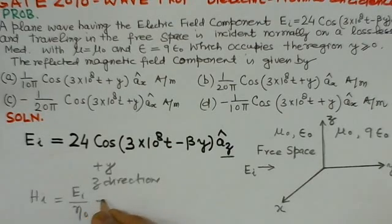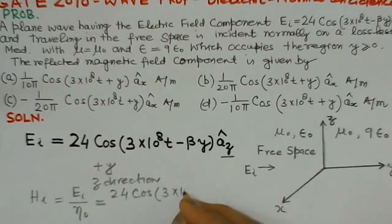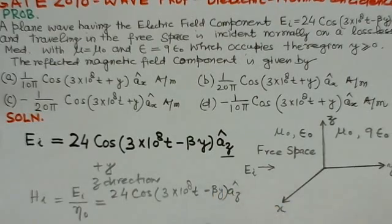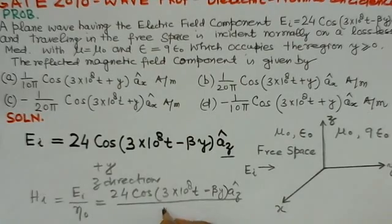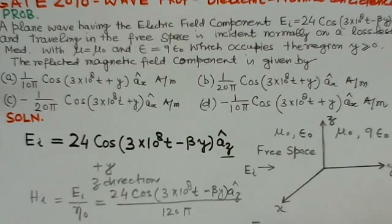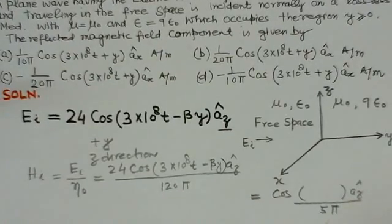We have already seen this equation is 24 cos(3×10^8t - βy)az. Now, η0 we can write as 120π. So this comes to 24 over 120π, which equals 1 over 5π. So this would be (1/5π)cos(3×10^8t - βy)ax. This is the value for Hi.